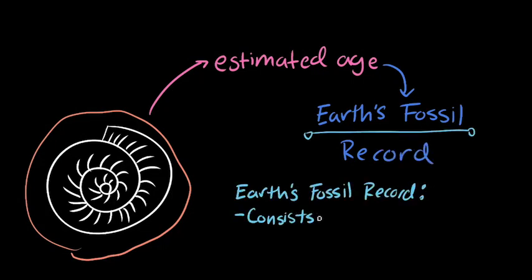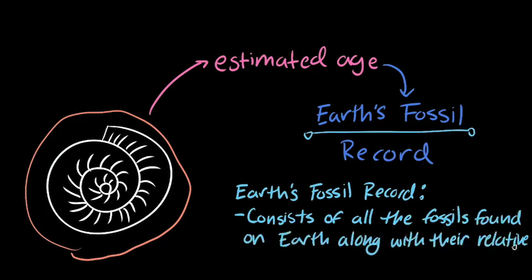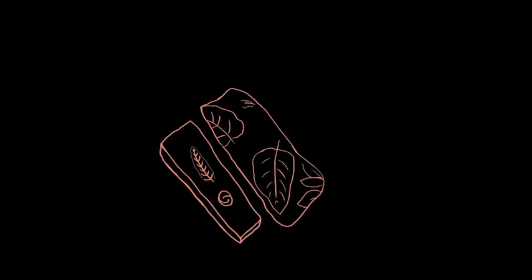Earth's fossil record consists of all the fossils found on Earth along with their relative ages, and it provides us with the big-picture view of the history of life on Earth. And with that, you now know how fossils are formed and dated. Let's go back through the layers of this lesson and go over what we've learned today.